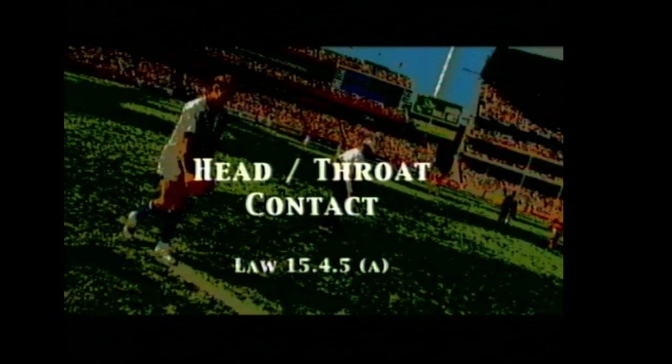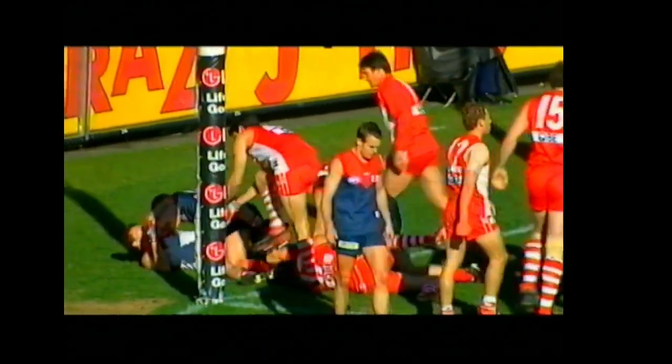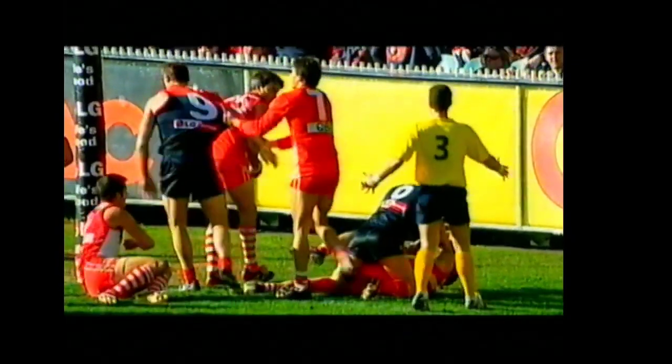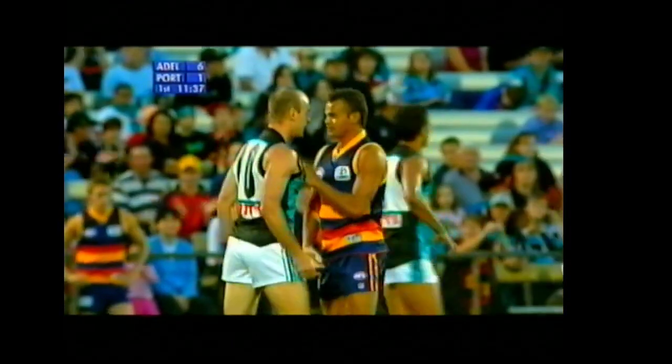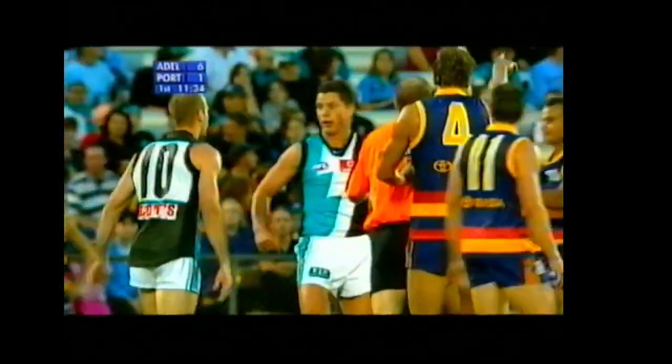The first segment on the tape is head-throat contact, which comes under the broad heading of high contact. The rule states a player who makes prohibited contact with any part of his body above the shoulders shall be penalised. The essence of the rule states that any grabbing or pushing to the throat will be deemed to be illegal contact.